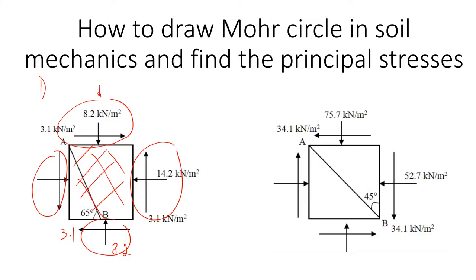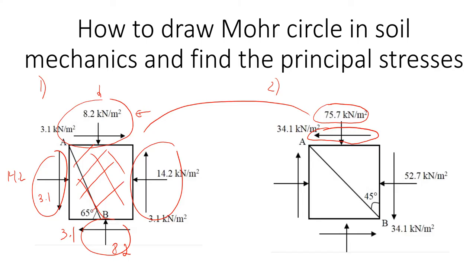The same thing applies to stresses acting on the left hand side — it's going to be a compressive stress of 4.2 and shear stress of 3.1. These stresses do exist, we just don't write them. We're going to look at the second example, which is quite similar but with different numbers, and you'll see that the direction of the shear stress on the top is also opposite compared to example one.